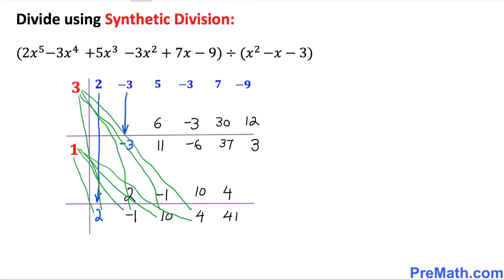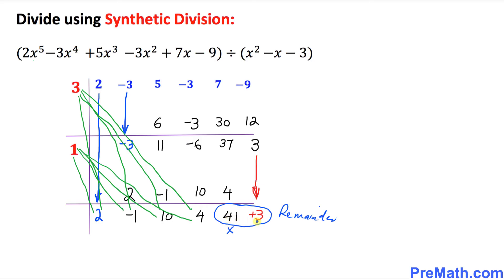We are pretty much done now. The next final step is to bring this positive 3 all the way down to the bottom. So 3 shows up right here — this is the same as positive 3. This whole part is our remainder. The first number, 41, is going to be with x, and the next number is a constant term. So our remainder is 41x plus 3.